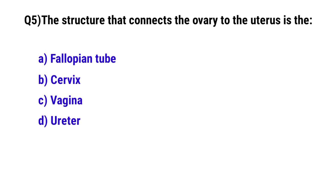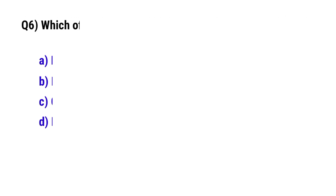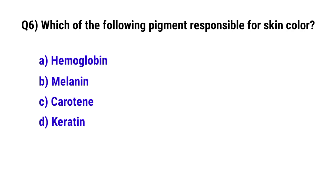Question number 5: The structure that connects the ovary to the uterus is? The correct option is A: Fallopian tube. Question number 6: Which of the following pigments is responsible for skin color? The correct option is B: Melanin.